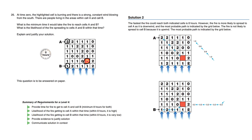Here are the requirements to reach the highest level four. We need to provide time for fire to get to cell A and B, minimum eight hours for both. Likelihood of the fire getting to cell A within that time is high, and the likelihood for the fire to get to cell B within that time is very low. We need to provide evidence to justify the solution and communicate the solution in context. Make sure you're showing your work and explaining things clearly.